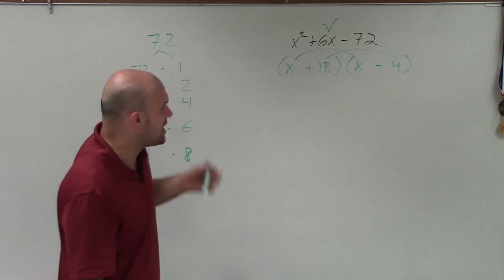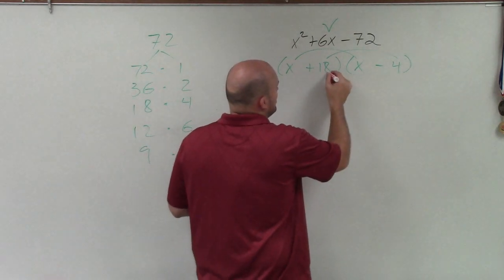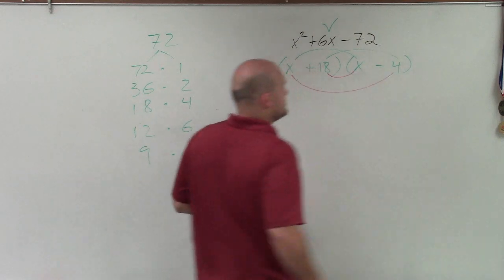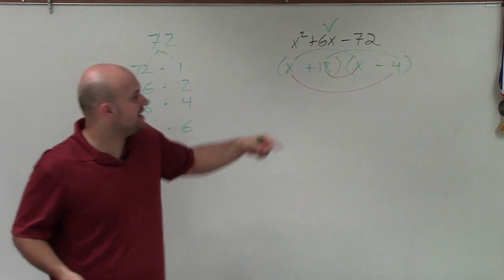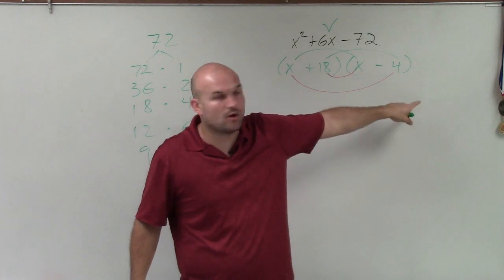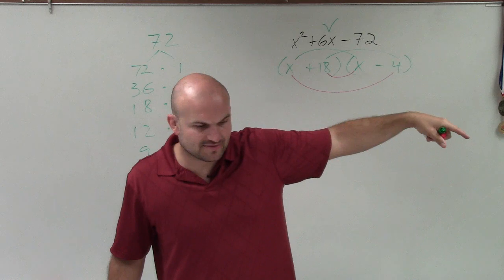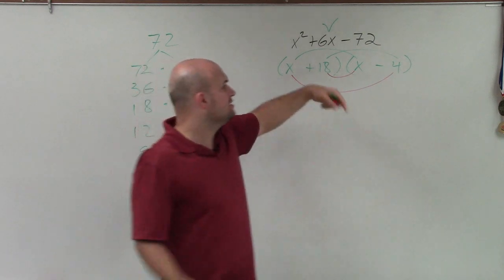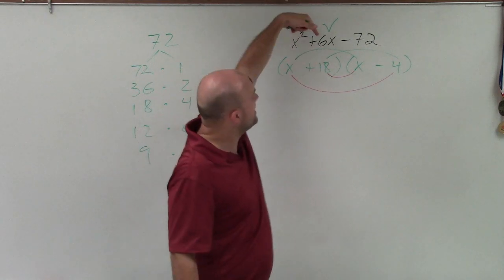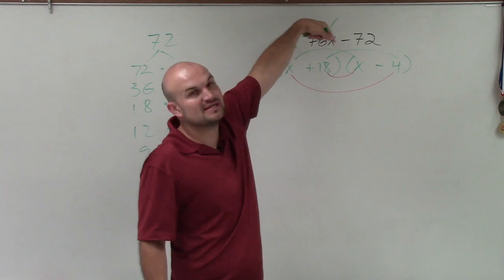So pretty much what we do is we have these two parts covered from the distributive property. But remember, the distributive property or FOIL, you also have to multiply these two. And when you multiply 18 times x and x times negative 4, well, that gives me 14x, right? So you can combine those middle terms. And when you combine those middle terms, that gives you 6x.